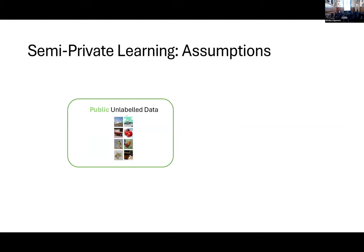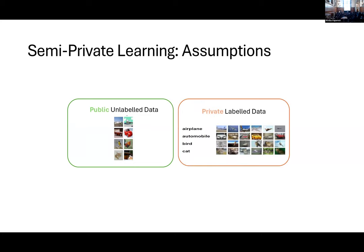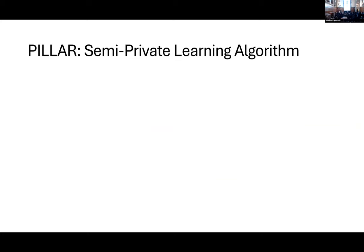Let's introduce the setting of semi-private learning. The assumption is that we have access to some public unlabeled data, and this data can be available because you scrape it from the web, or because the right to protect this data is no more enforced. Then we assume to have access to some private labeled data, and the privacy on this data set should be protected with the traditional epsilon-delta guarantees.